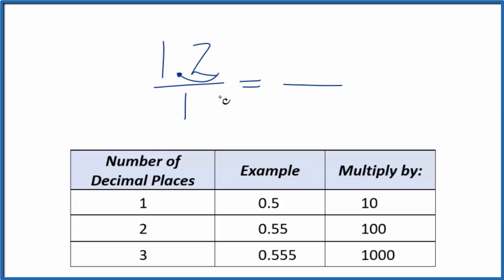We have one decimal place here. With one decimal place, we're going to multiply by 10, like this. So 10 times 1.2, that gives us 12, and that's a whole number. So we're getting close.